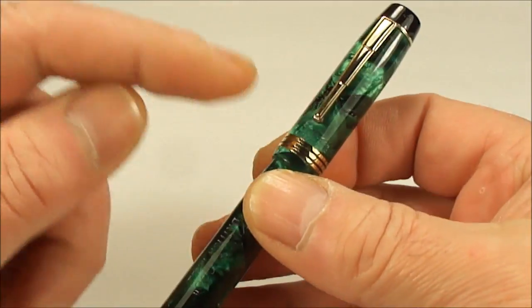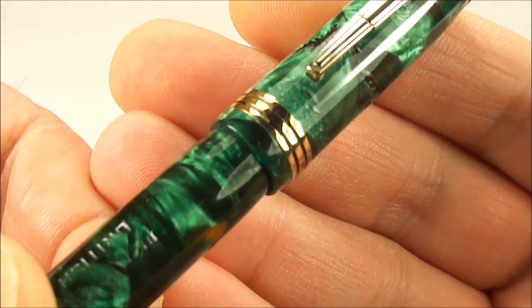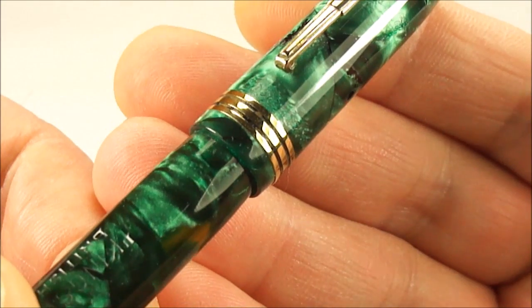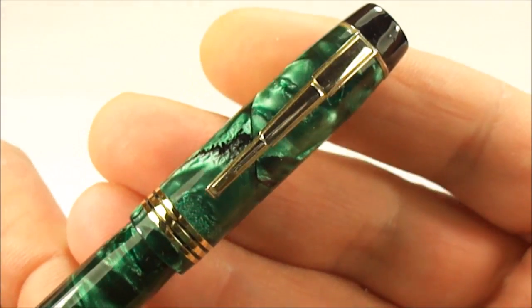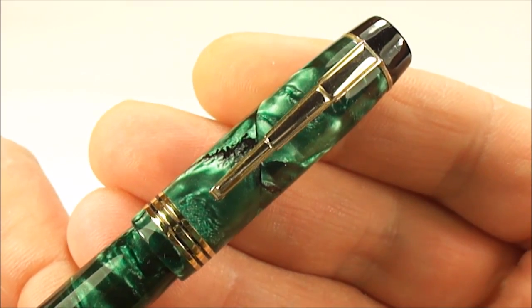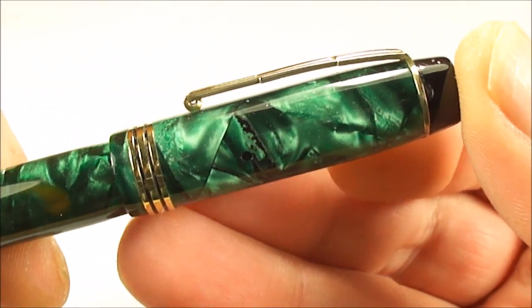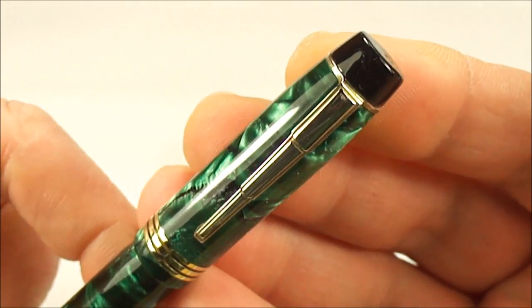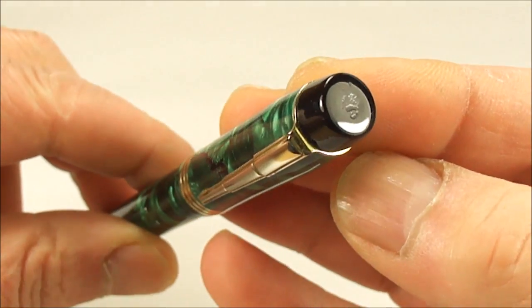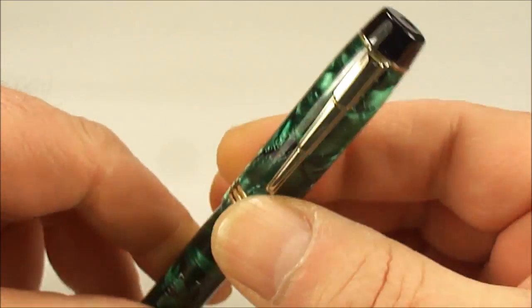Now these Kingswood pens had slightly different configurations or trim. If you look at this, you can see it's got these three cap bands to the bottom of the cap there. The clip is a very recognizable Kingswood clip, it's got three steps to it. It's a very recognizable clip and then to the top there we've got this cap stud to the very top of the cap there.